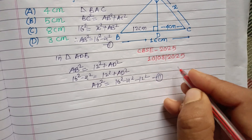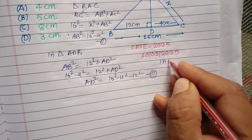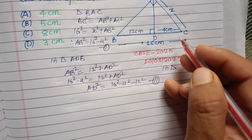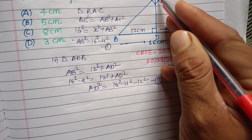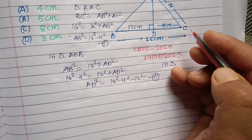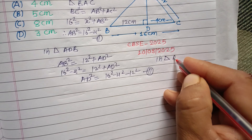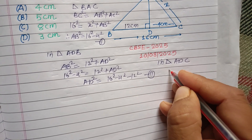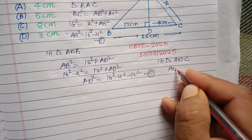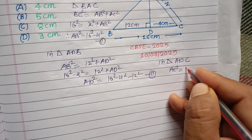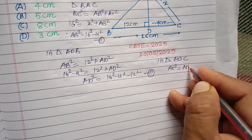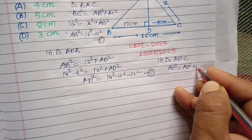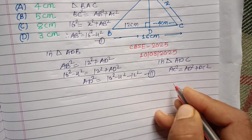In right angle triangle ADC, we apply Pythagoras: AC² = AD² + DC².